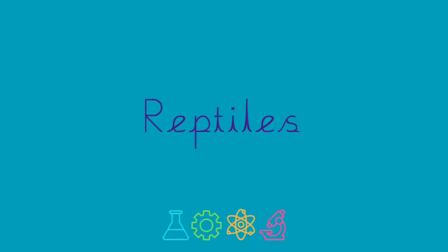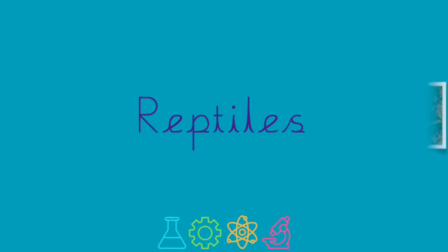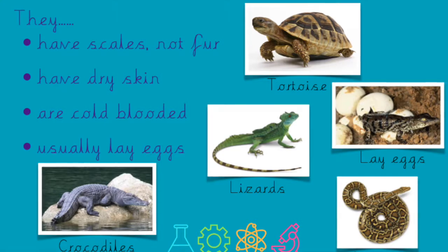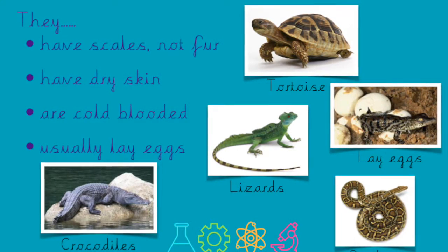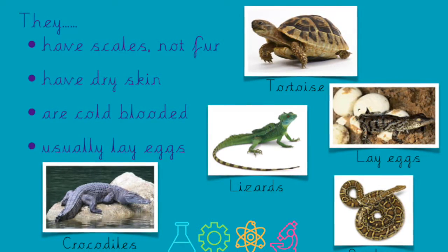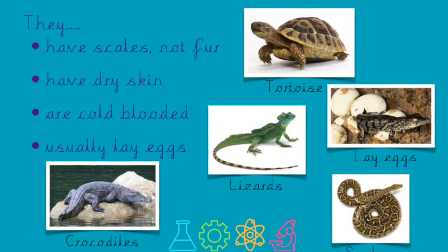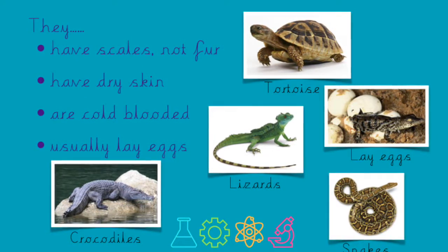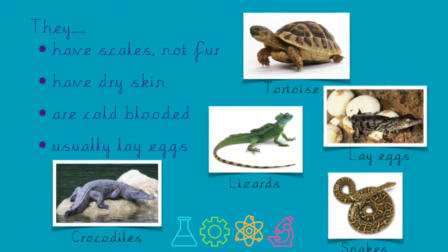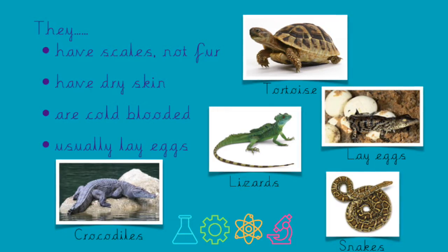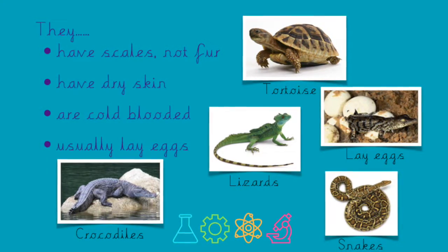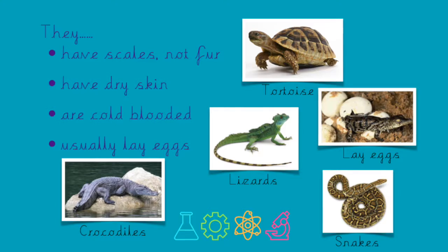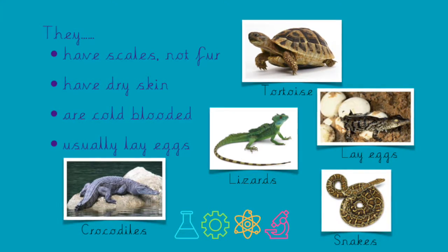Reptiles have scales but not fur. Their skin is dry, they usually lay eggs but can sometimes give birth to live young. They are cold-blooded animals. Some examples are snakes, tortoise, lizards, crocodiles and comedians.